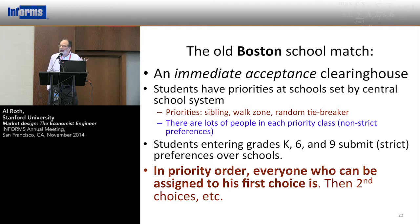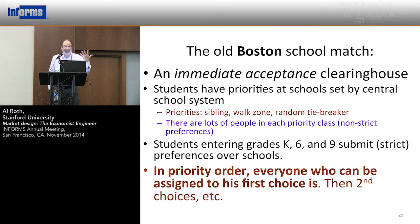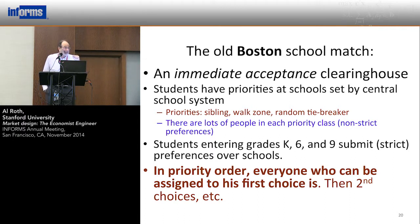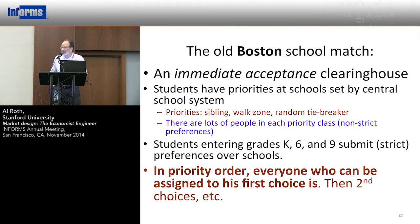But it turns out it's a very hard one to figure out how to fill out if you're a parent. If you don't get your first choice, there's an excellent chance your second choice will have filled all its places with people who listed it as their first choice. So if you don't get your first choice, there's a good chance you won't get your second or third choice either, and you'll drop down through the system to a school with empty places after everyone has gotten their choices. Families had to think very hard about how to fill out their preference list — they had to list first the schools their kids could get into, not their true first choices.